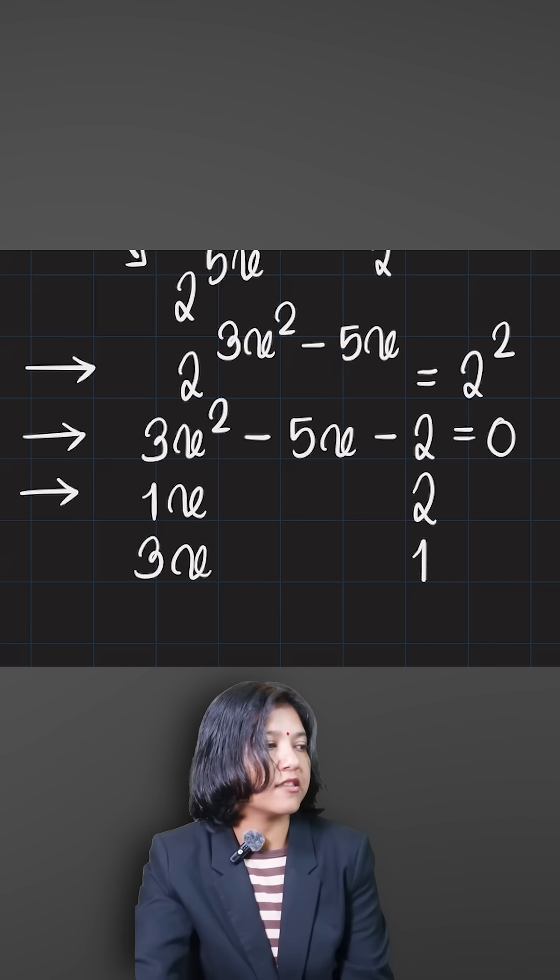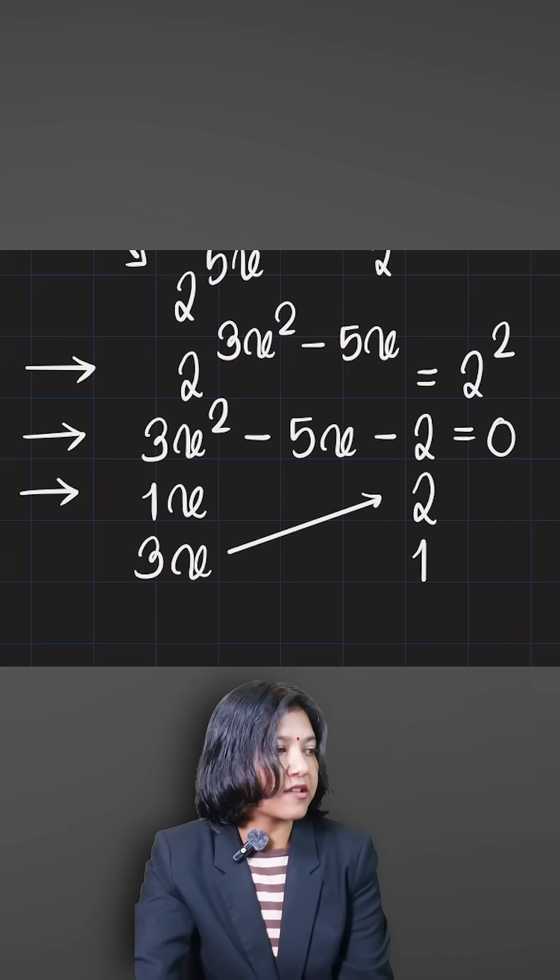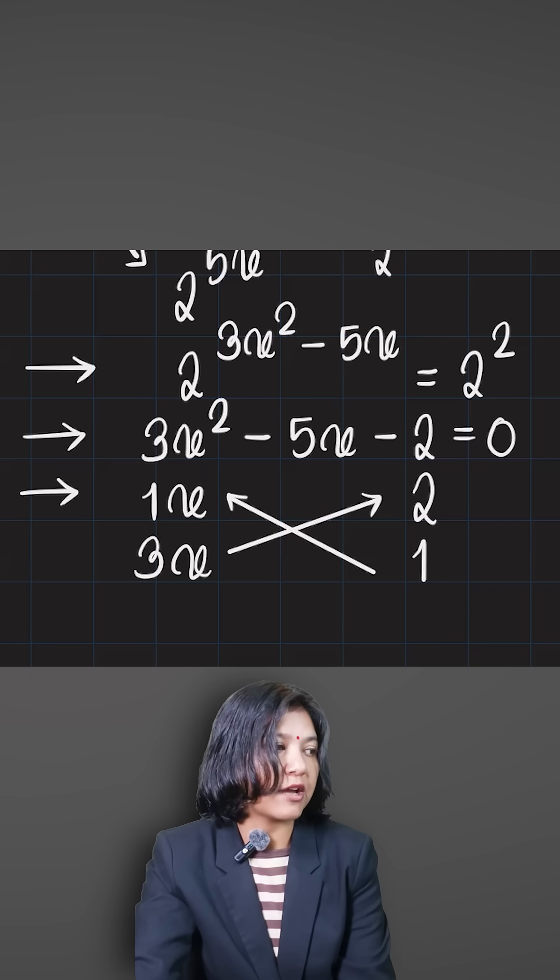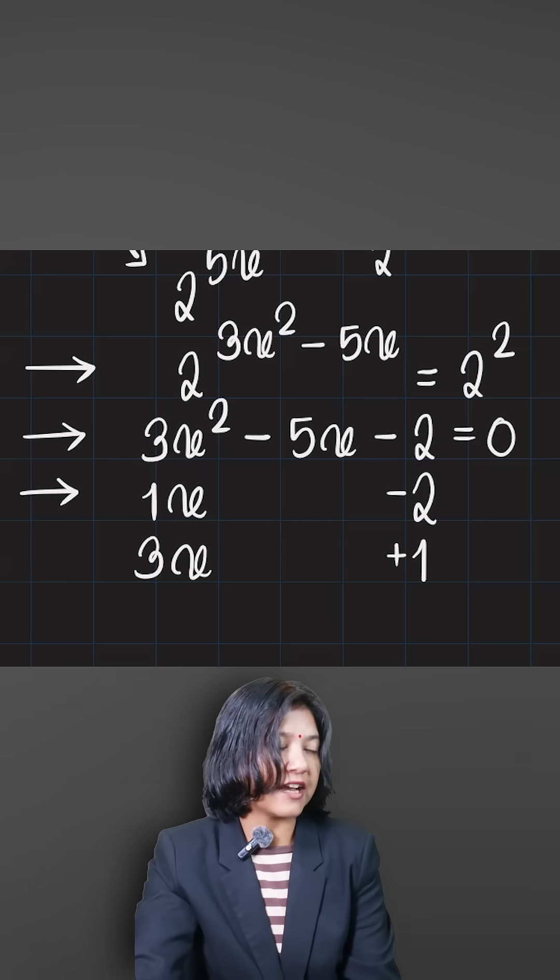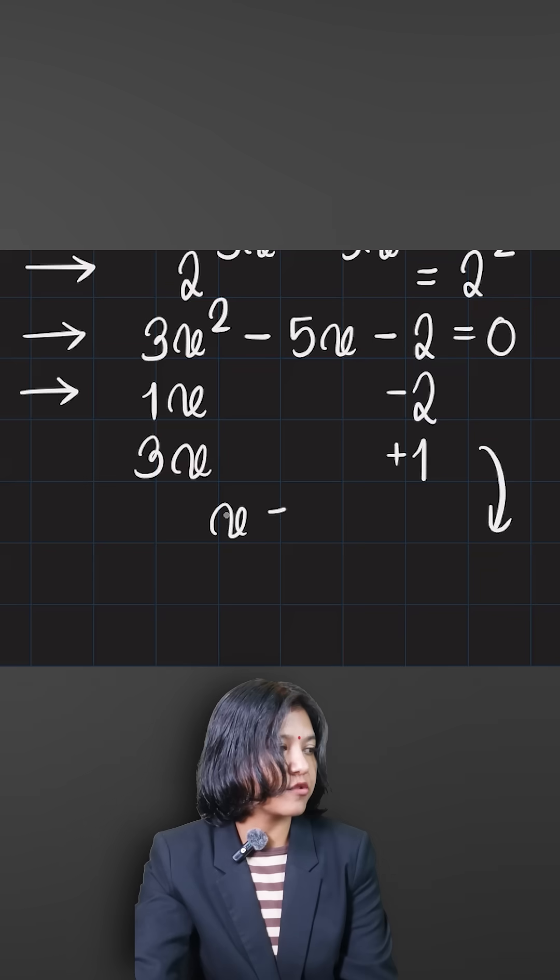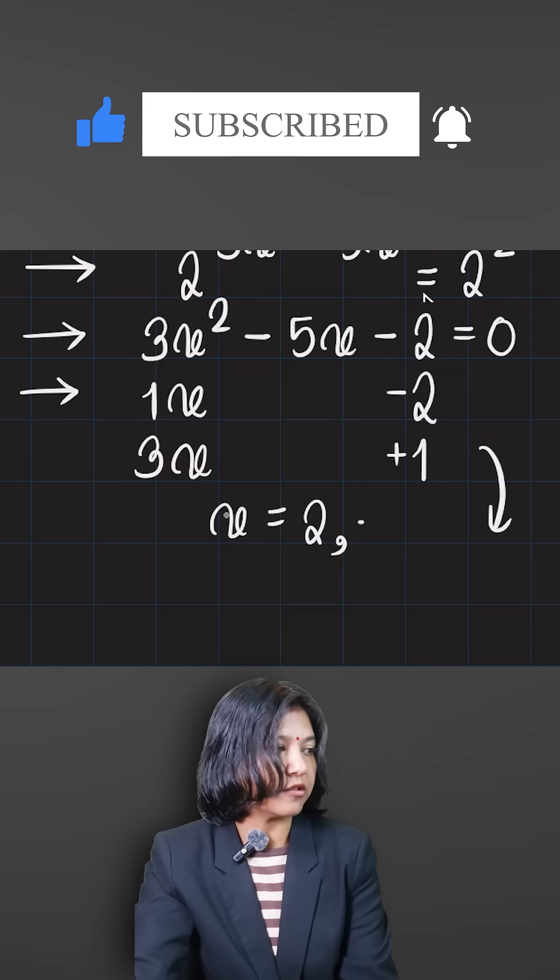If I write it 2 and 1, then 3 into 2 is 6. Now 6 minus 1 is 5. I have to get negative 5, so I want the bigger number to be negative and the smaller number to be positive. So I got the two factors: x minus 2 and 3x plus 1, giving me the values of x as positive 2 and negative one-third.